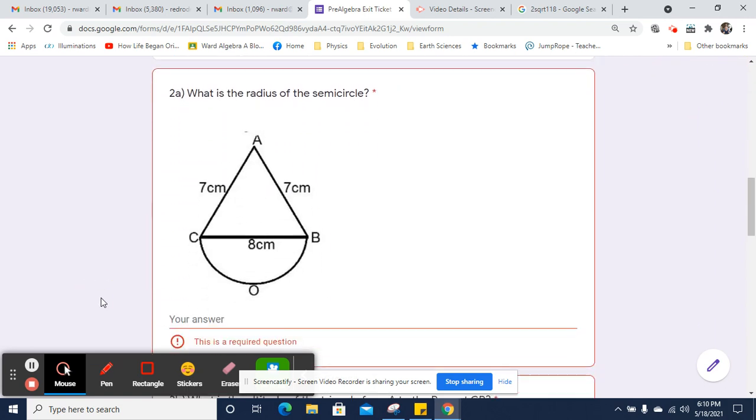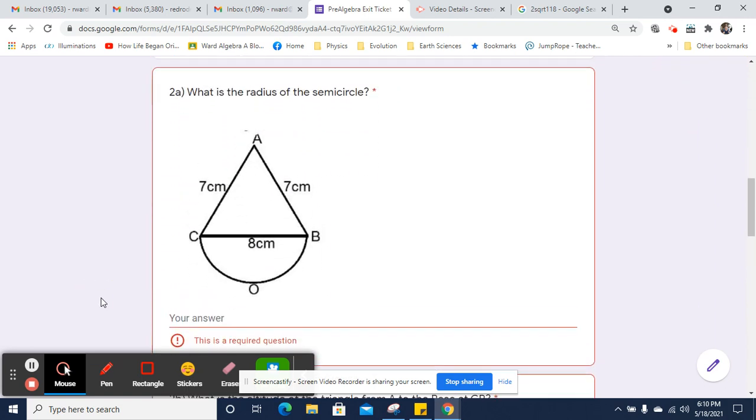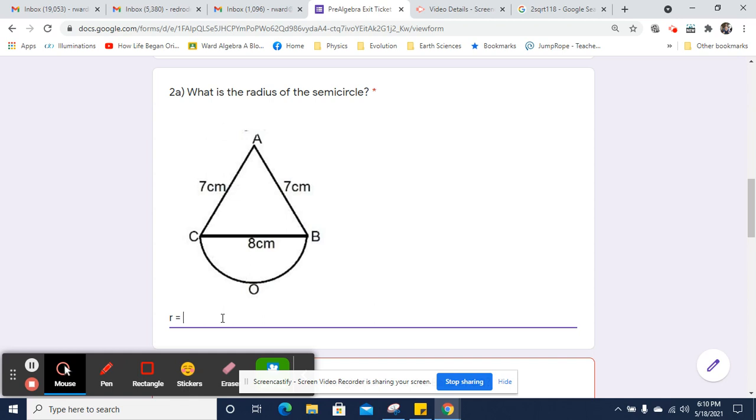Now, let's take a look at this. What is the radius of the semicircle? Well, its diameter is 8, so the radius equals half of 8, or 4 centimeters.